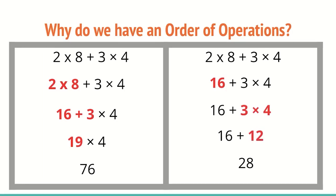We have to use order of operations so that each time we do a problem, everyone gets the same answer. It's a universal idea — if we solve math problems this way, we're all going to get the same answer. Because if we keep varying it, we won't all be on the same page, and different answers for different things could mean big issues depending on whatever you're working on.